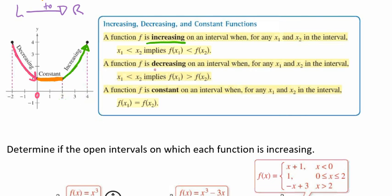Decreasing on an interval means that if x1 is smaller than x2, the function value at x1 is greater than the function value at x2. So here we notice that negative 2 is smaller than 0 — negative 2 is our x1 and 0 is our x2 — but our function is decreasing because the value here is larger than the value further along.